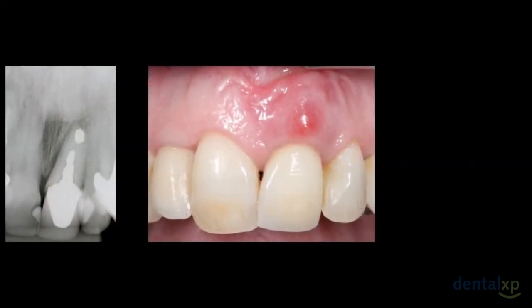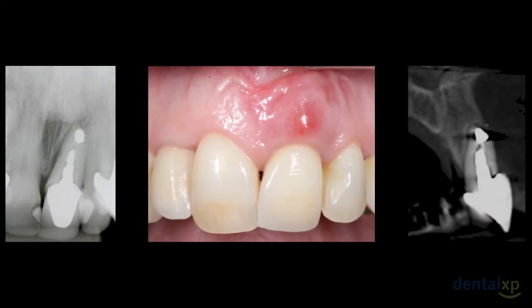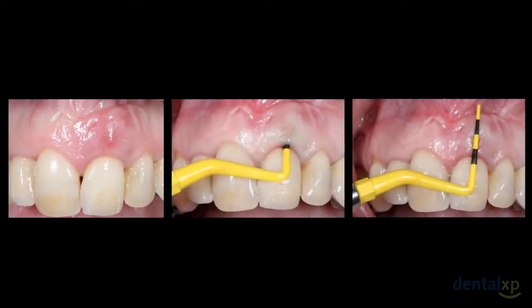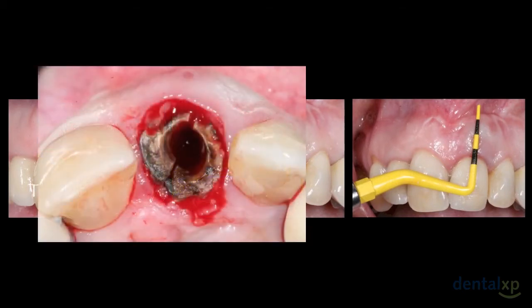Let's start with this case where we have an abscess in the left central incisor. CBCT view showed total loss of the buccal bone wall and partial loss of the palatal wall. This is the extent of the bone defect at the buccal aspect, and we can notice the presence of a fistula. The probing depth was 10 mm with a thick periodontal biotype. The bone loss was caused by root fracture.